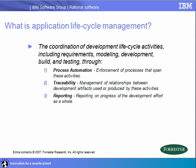So what is Application Lifecycle Management? It's often called ALM, or in our case, Collaborative ALM. We like the definition provided by Forrester, where the focus is really on the coordination of development lifecycle activities, which includes managing requirements, modeling, development, build management, and testing through the three dimensions of process automation, traceability, and reporting.